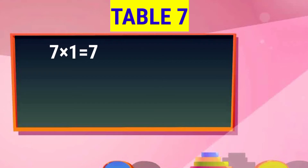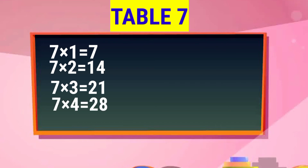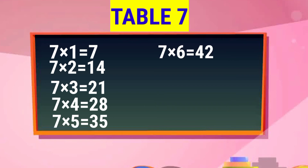7 1s are 7. 7 2s are 14. 7 3s are 21. 7 4s are 28. 7 5s are 35. 7 6s are 42.